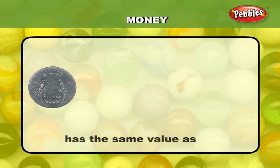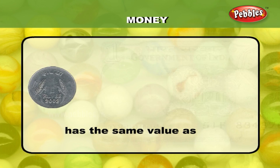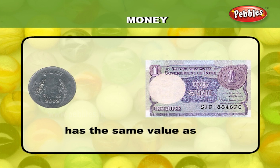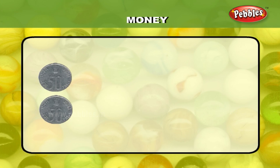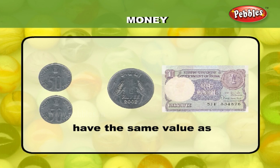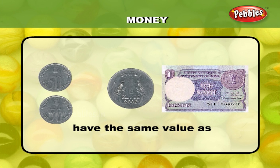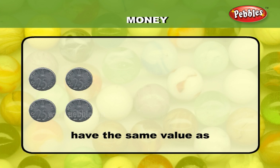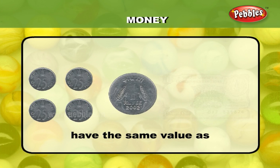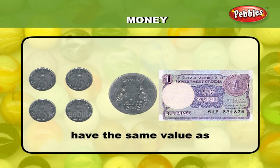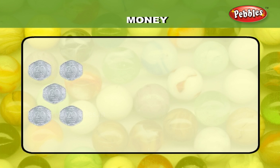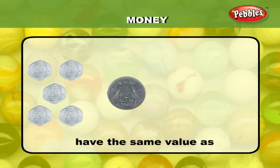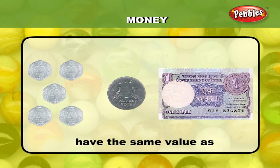A one rupee coin has the same value as a one rupee note. Two 50 paise coins have the same value as a one rupee coin or note. Four 25 paise coins have the same value as a one rupee coin or note. And five 20 paise coins have the same value as a one rupee coin or note.